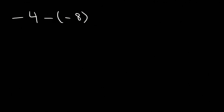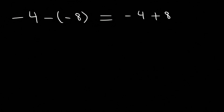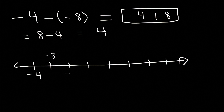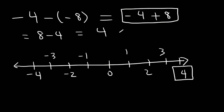What would you do with three negative signs? Convert the two negative signs right next to each other into a positive sign. So negative 4 minus negative 8 equals negative 4 plus 8, which is the same as 8 minus 4, giving you 4. On the number line, start at negative 4, add 8 by traveling right, and you land on positive 4.